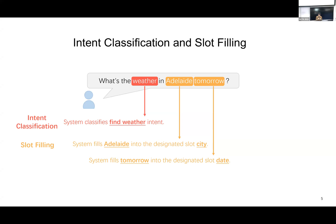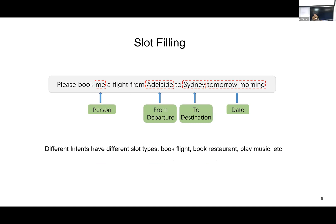Different intents may have different slot values. For example, when you want to book a flight, the key slots may be the person who wants to book, the departure place, the destination, and the date. Some intents may share common slots — for example, when you want to book a restaurant, you may also be concerned about who wants to book. Most intents have different slot types.